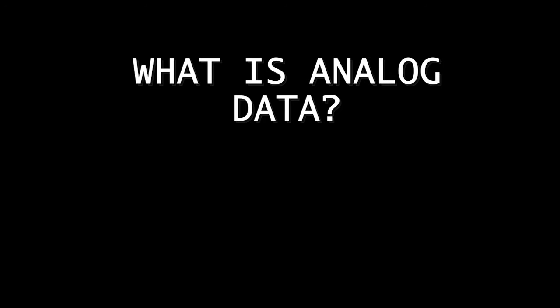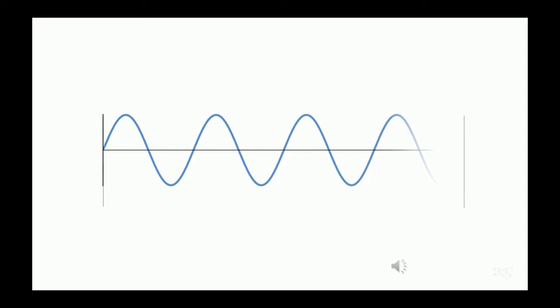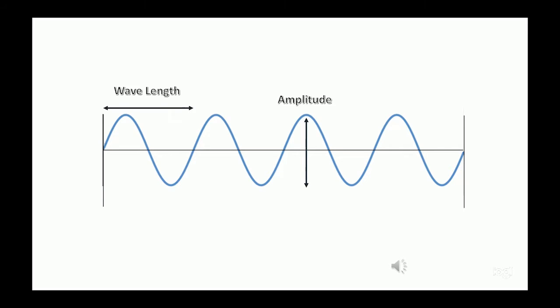But what is analog data? Analog is a continuous form of data and is a physical representation of the information that it carries, by measuring the amplitude and frequency of the wavelength. This image represents a 4Hz signal, as four complete cycles of the wave occur within one second interval.